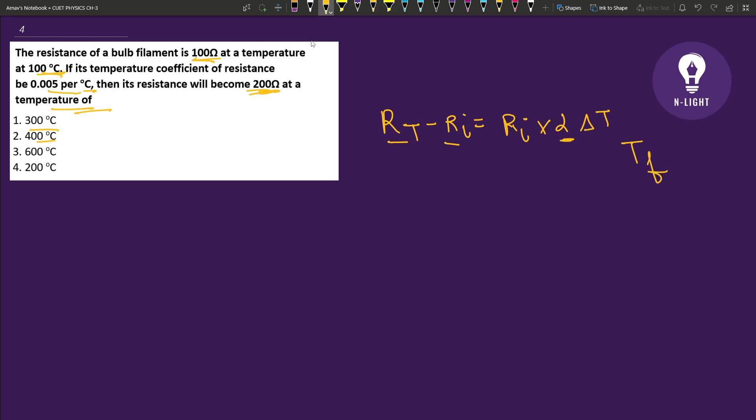Final temperature equals R times initial into alpha delta T. Delta R divided by R initial into alpha. What is delta T? Final temperature minus initial temperature. Final temperature is equal to delta R upon R initial into alpha.